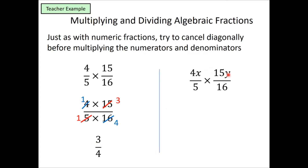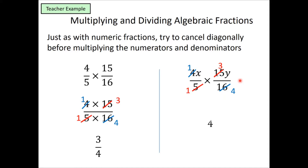Similarly with the algebraic fractions — I've used the same numbers in this fraction. So the 4 and the 16 will cancel to give me 1 and 4 there. The 5 and the 15 will cancel to give 1 and 3. So I'm left with 1 times x times 3y on the numerator and 1 times 4 on the denominator. That gives me 3xy over 4.